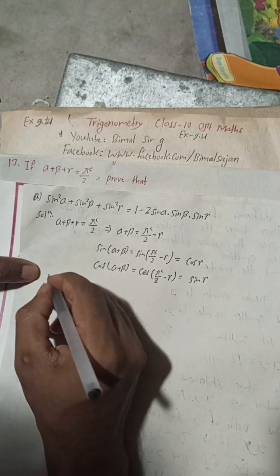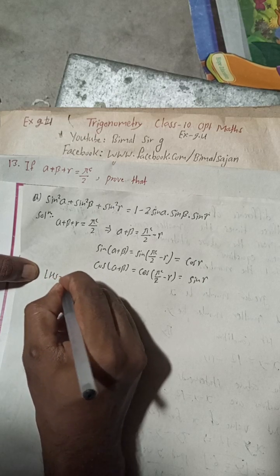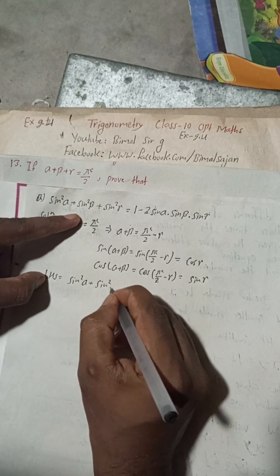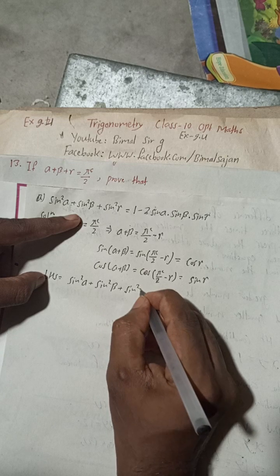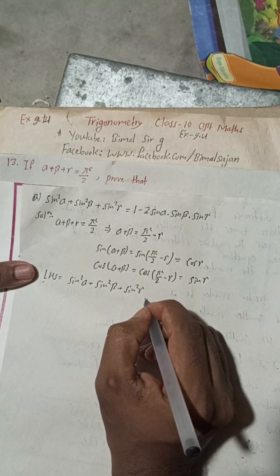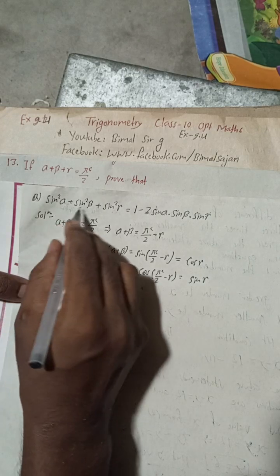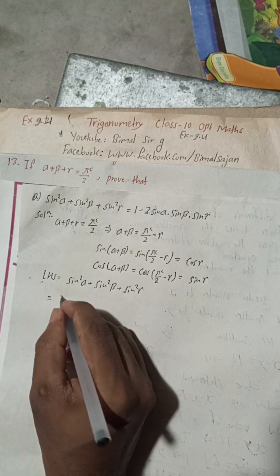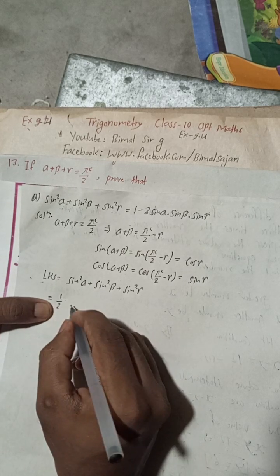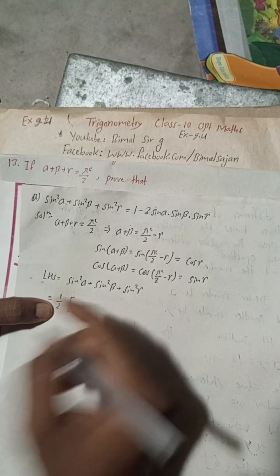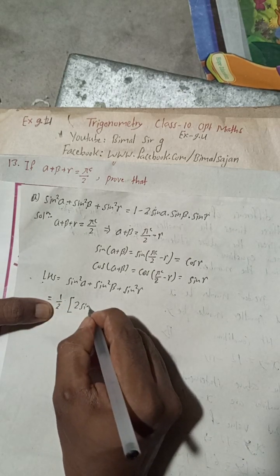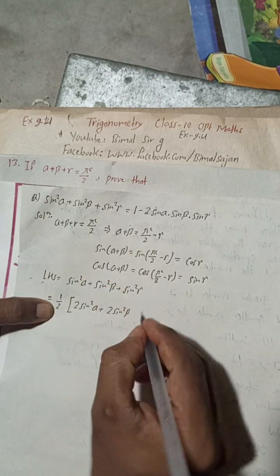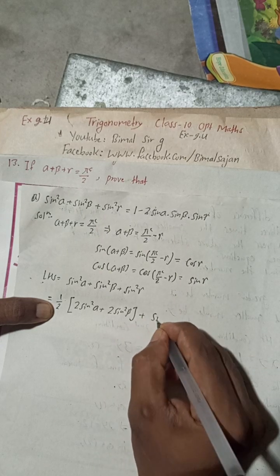Now, LHS = sin²α + sin²β + sin²γ. We will multiply by one-half inside, so it becomes (1/2)(2sin²α + 2sin²β) + sin²γ. If we take the two outside, the two will cancel and it will not affect the equation.